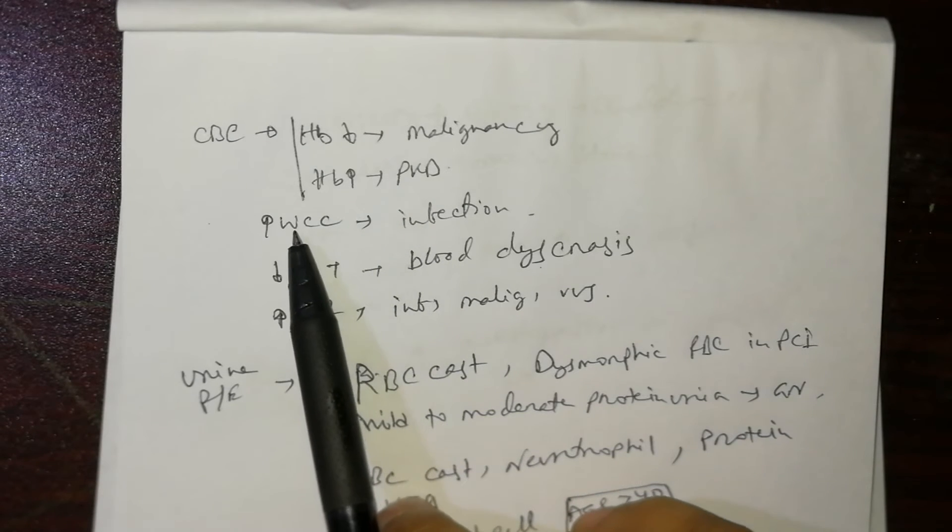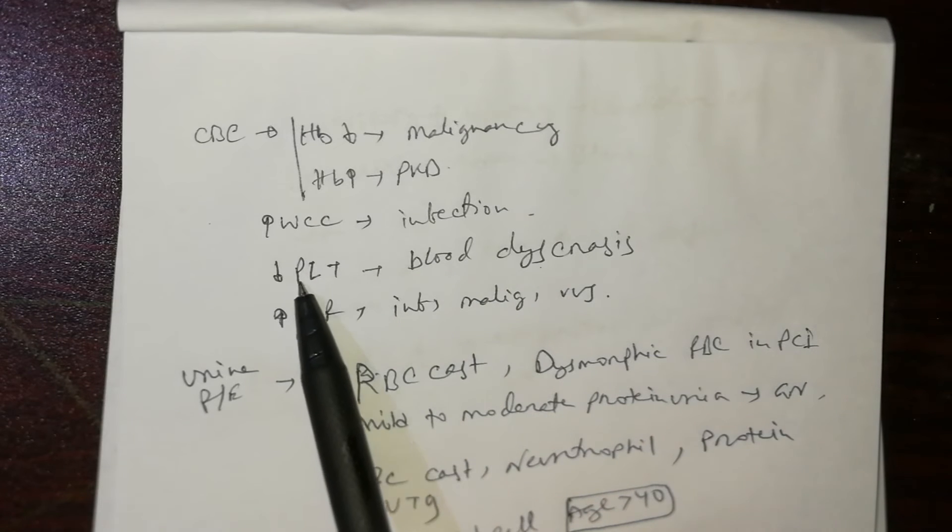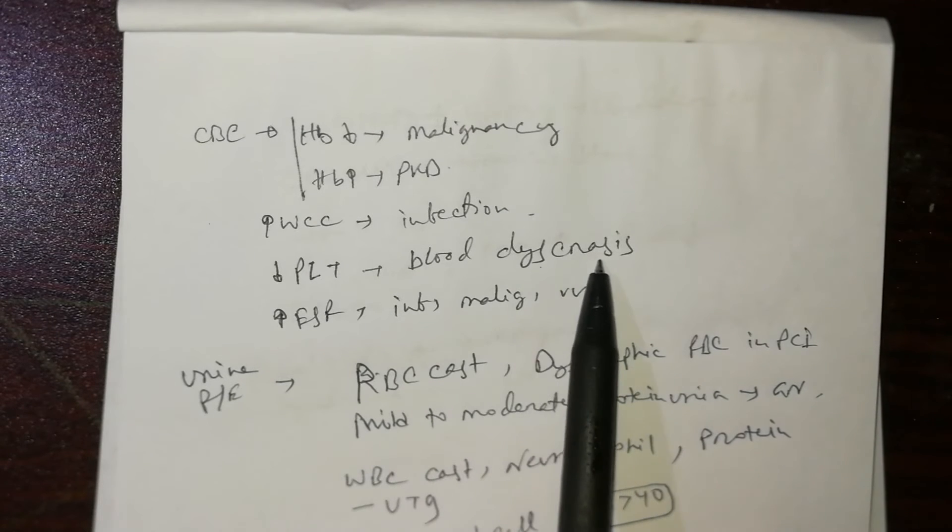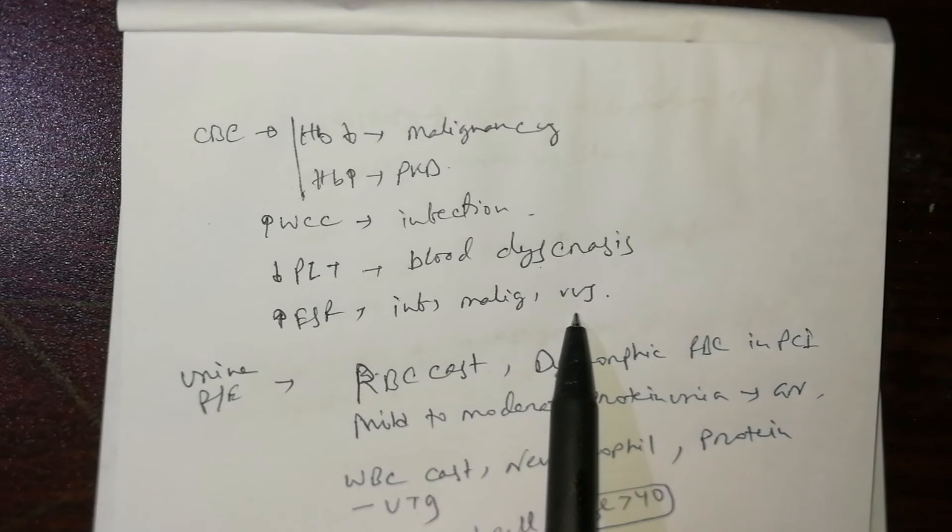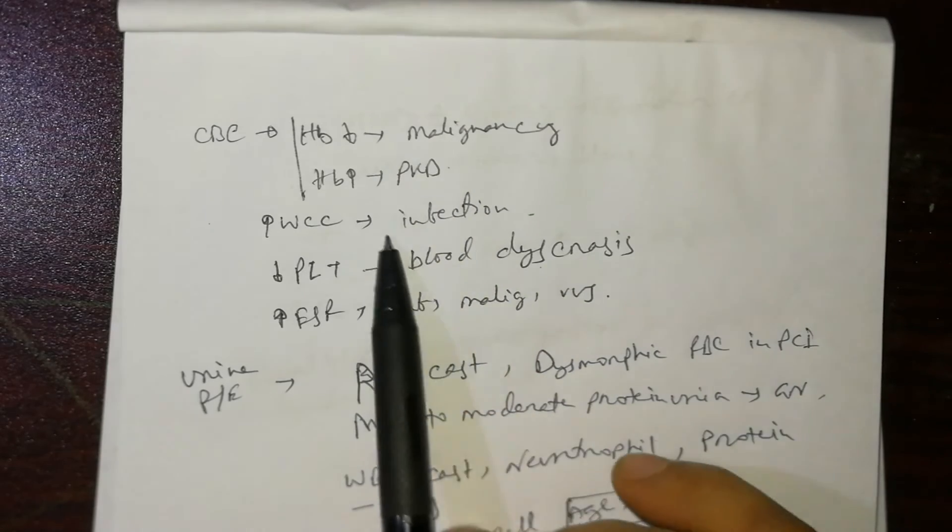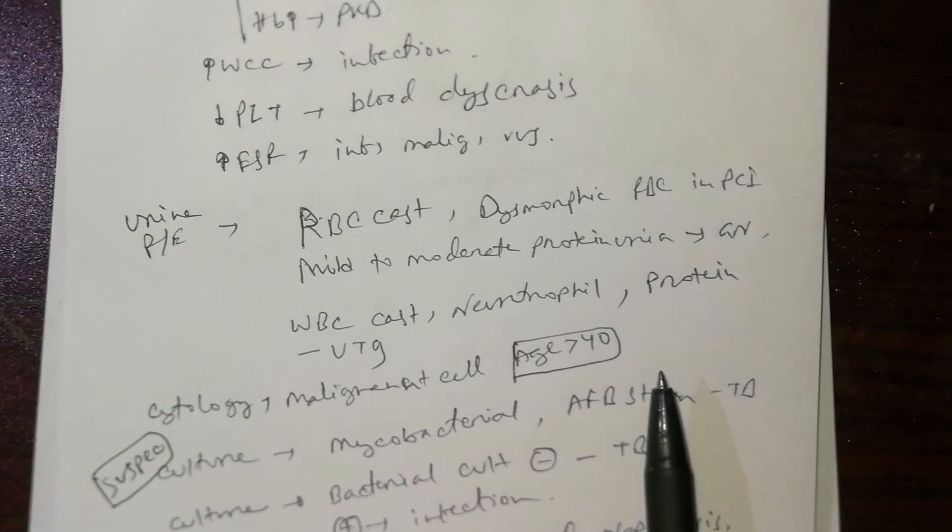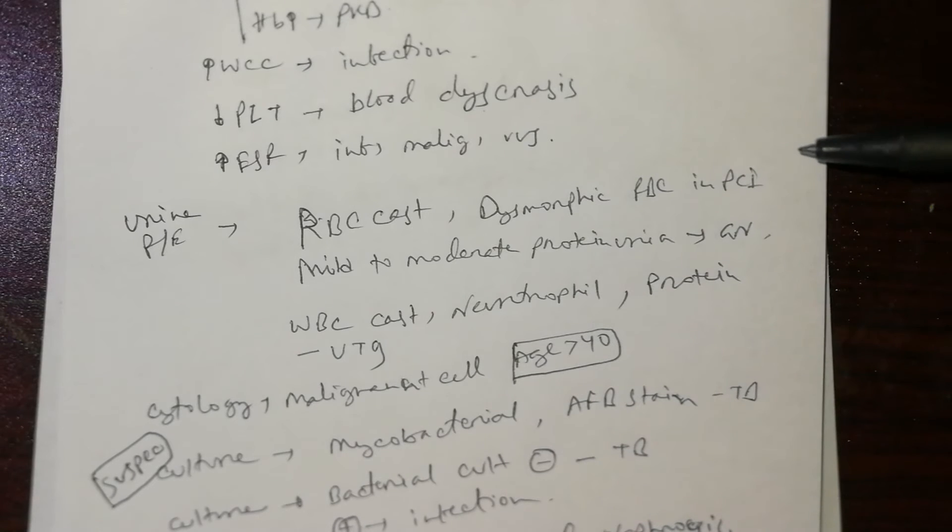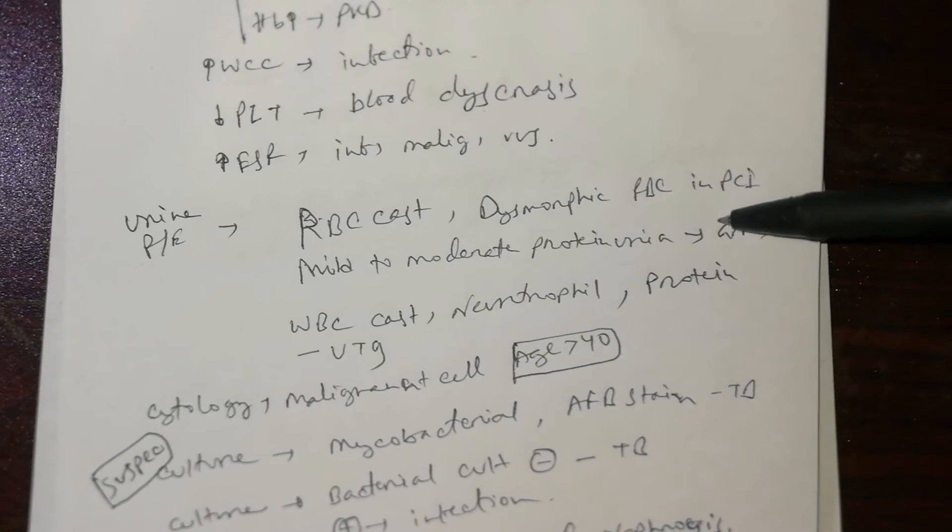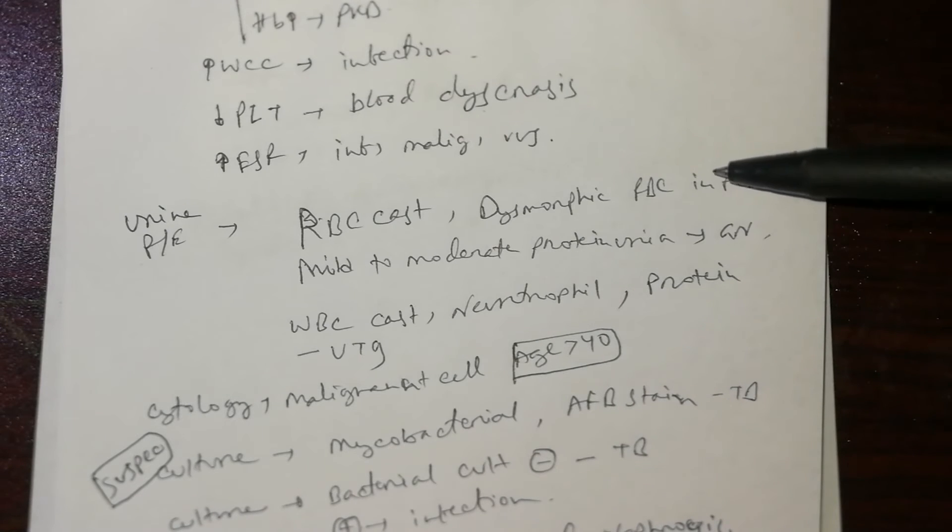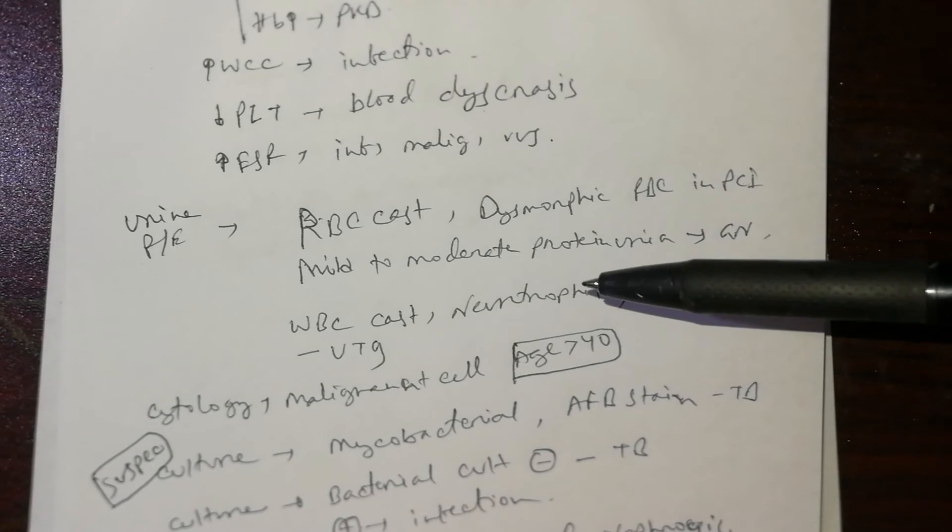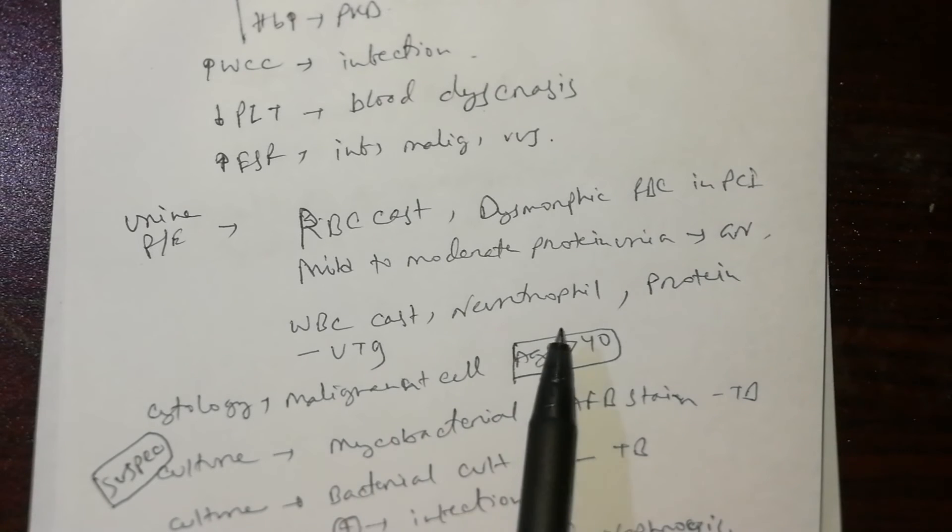White cell count increases in infection, platelet count decreases in blood dyscrasias, and ESR increases in infection, malignancy, and vasculitis. In urine, RBC casts, dysmorphic RBCs in phase contrast image, and mild to moderate proteinuria in non-nephrotic range are found in GN. GN has RBCs and protein or RBC casts or dysmorphic RBCs.